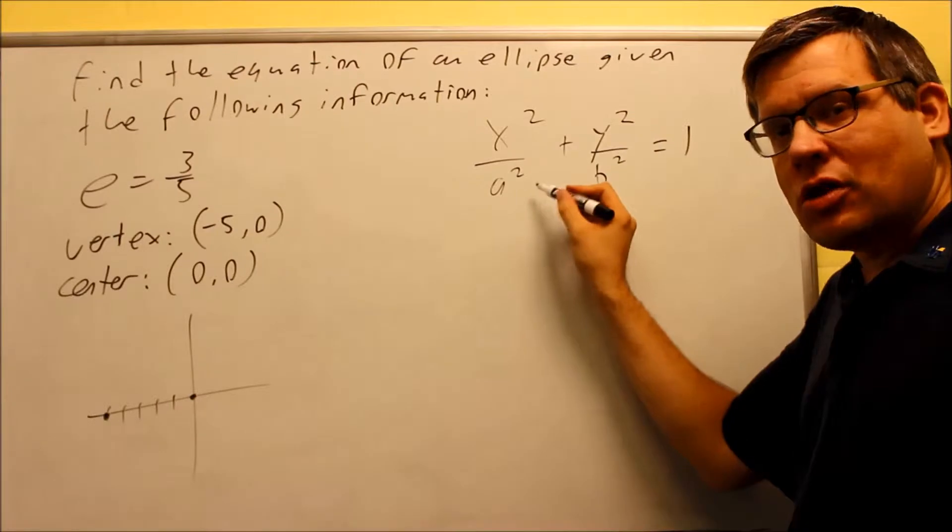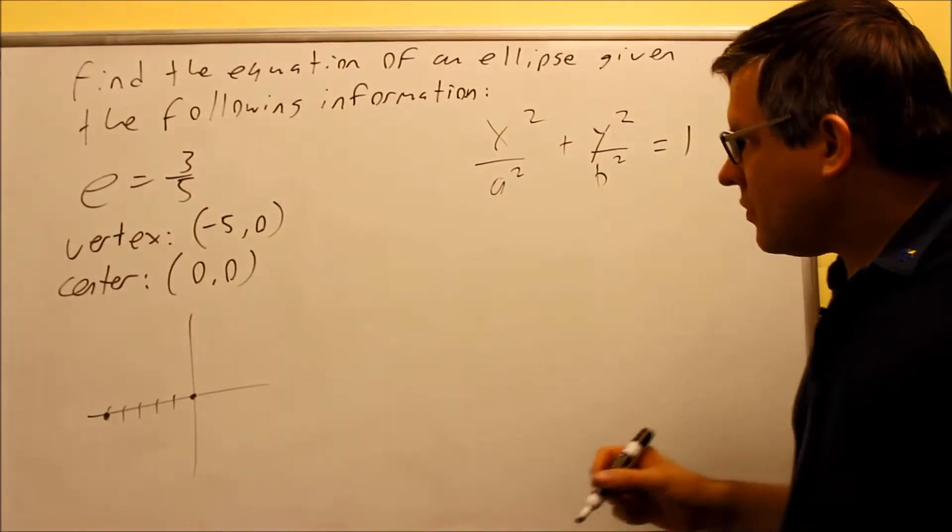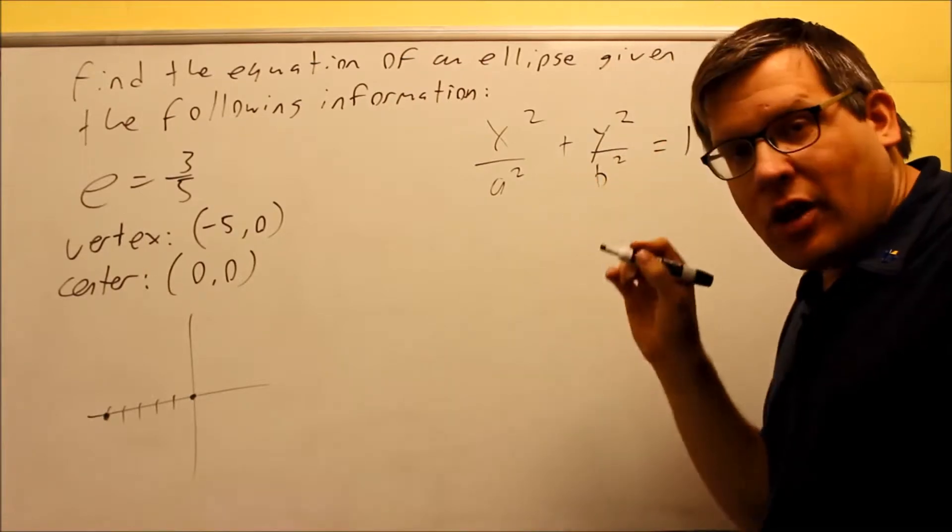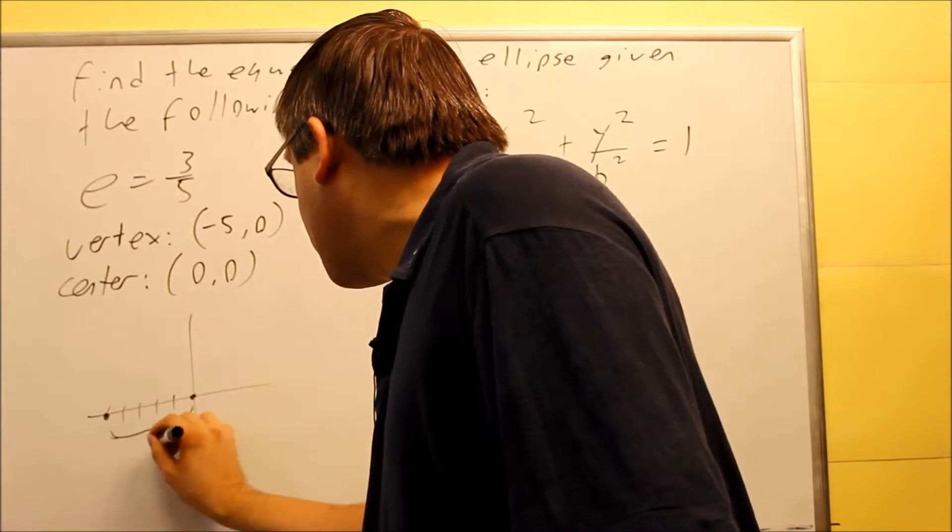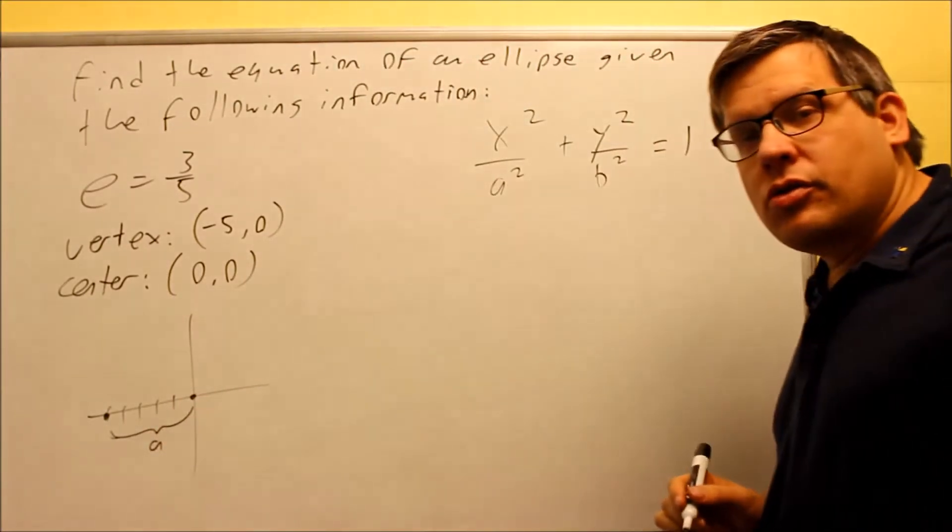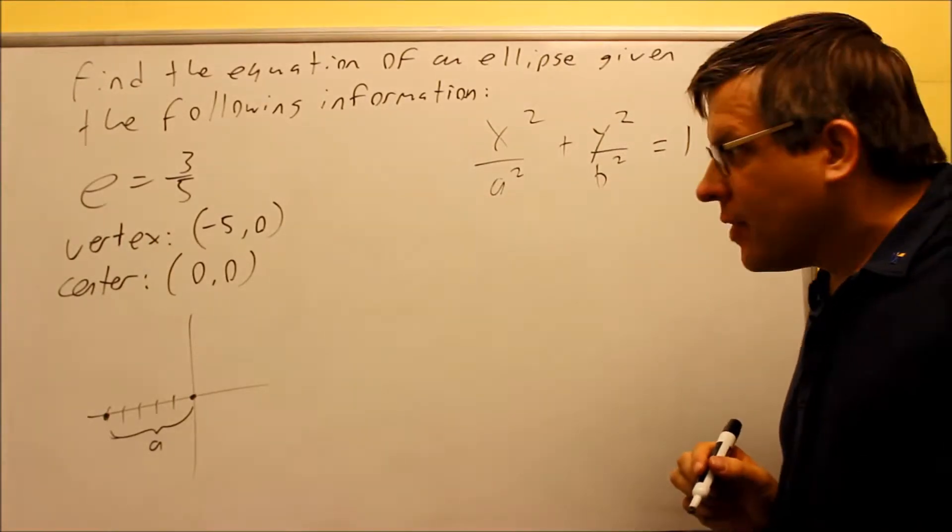Now, I already know the a value, actually, because the a is always the distance from the center to one of the vertices. So I know, automatically, I know a.